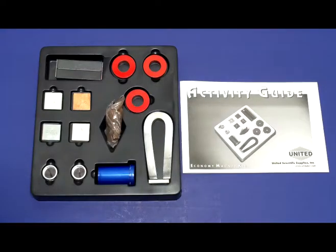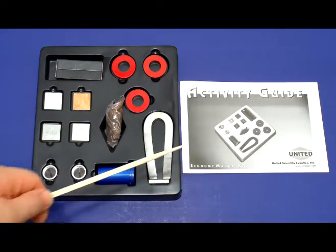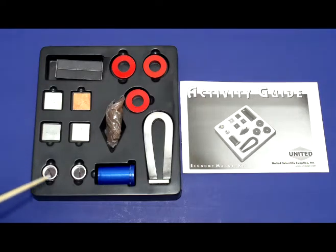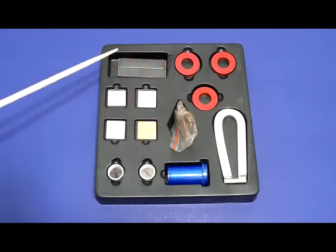The Economy Magnet Kit allows students to investigate magnetic fields, magnetic field strength, what properties a metal has in order to be attracted to a magnet, and the manual includes 16 activities to walk students through a variety of different experiments.